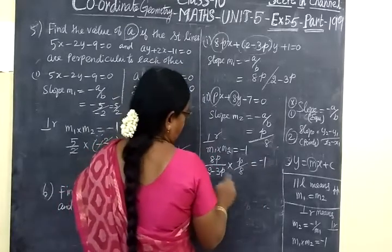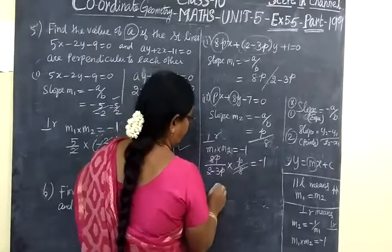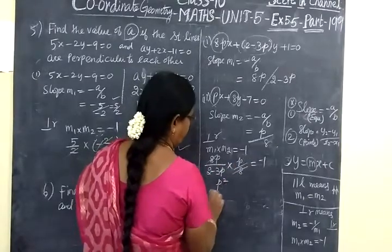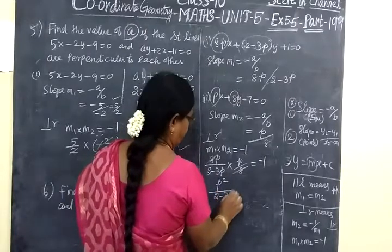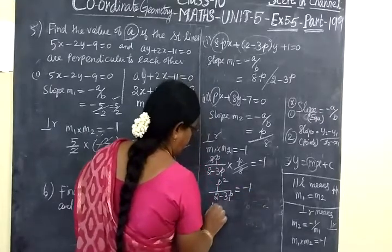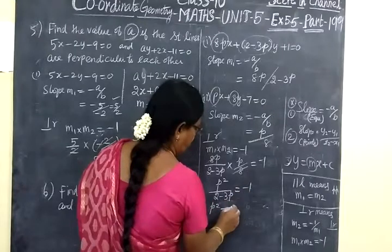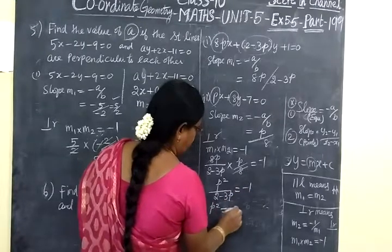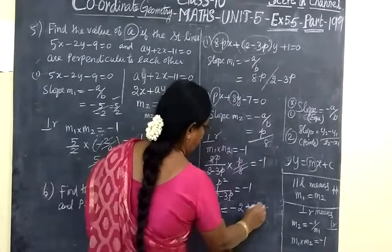M1 is 8P by 2 minus 3P, into M2 P by 8 equal to minus 1. So this answer, we have to cancel: 8P then P into P. P square by 2 minus 3P equal to minus 1. Take that side. So P square equal to minus 2 plus 3P.